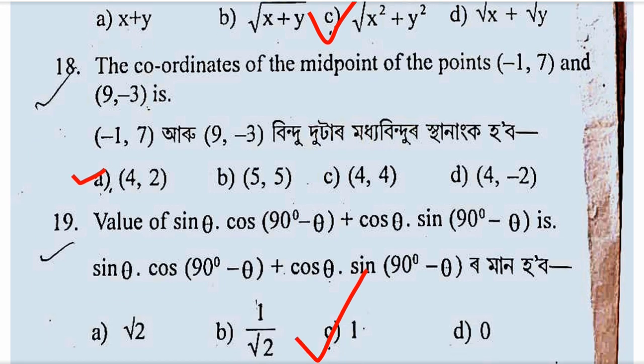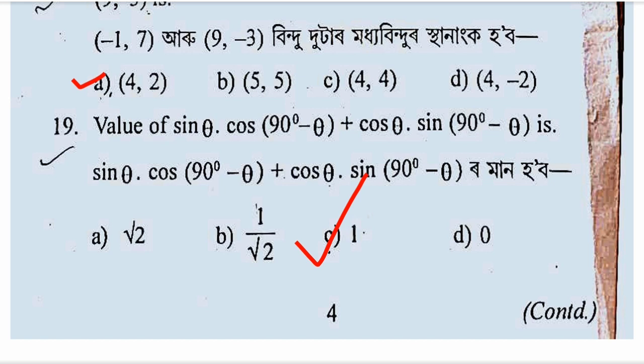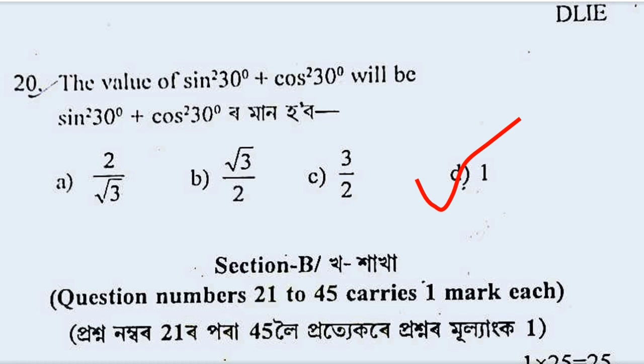The value of sin theta into cos 90 minus theta plus cos theta dot sin 90 minus theta. We have sin theta dot cos 90 minus theta. And since sin 90 minus theta is cos theta, we have sin theta. Therefore sin square theta plus cos square theta is 1.